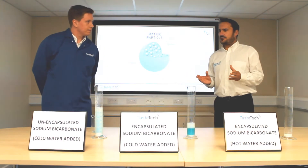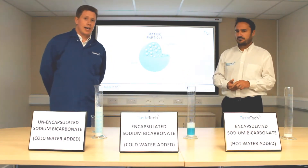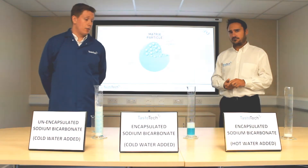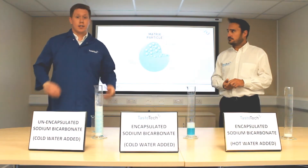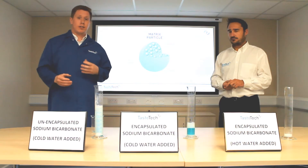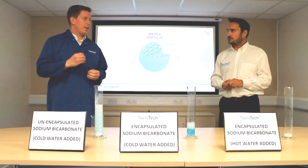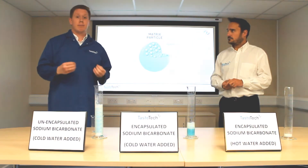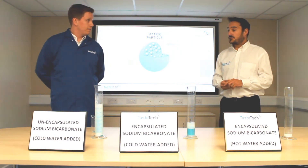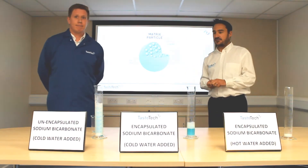Why would this system be useful for bakery applications? Well, this allows a bakery manufacturer to ensure that the production of carbon dioxide is targeted to the baking phase and is not being lost throughout the mixing phases. This is especially important in a low viscosity system where the gas produced by the carbon dioxide has the potential to be lost through the surface of the batter. So for example, manufacturers of large batter mixes may find this advantageous.